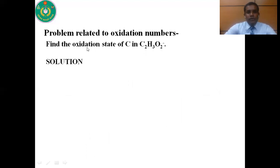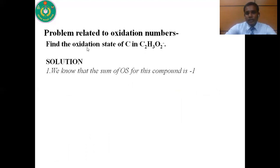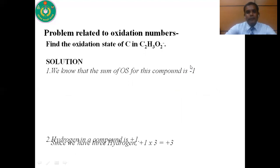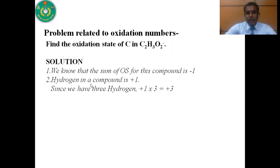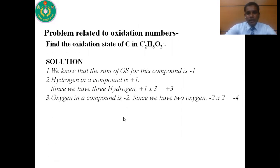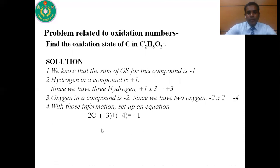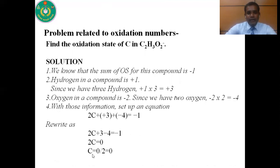Another example: find the oxidation number of carbon in C₂H₃O₂⁻. This compound is negatively charged, so the sum of oxidation numbers equals -1. Hydrogen is +1 and we have three hydrogens, giving +3. Oxygen is -2 and we have two oxygens, giving -4. So we write: 2C + 3 + (-4) = -1. Solving this equation, we get C = 0. That means the oxidation number of carbon in C₂H₃O₂⁻ is zero.